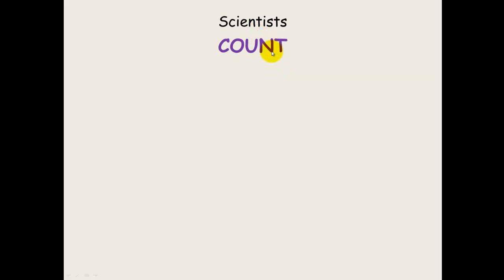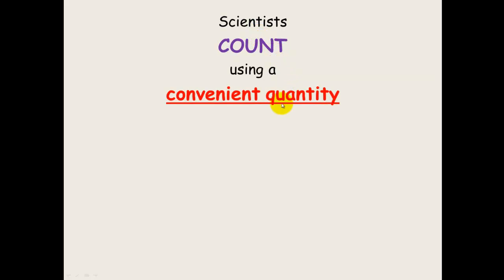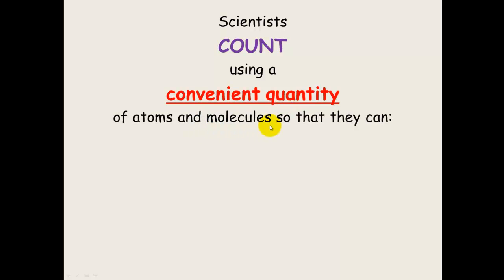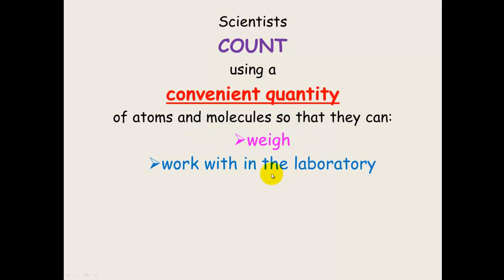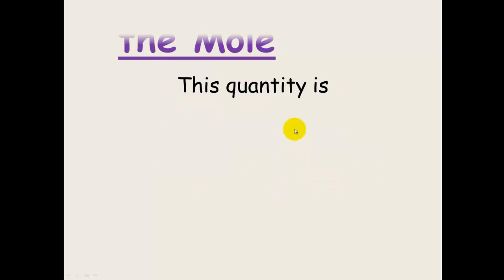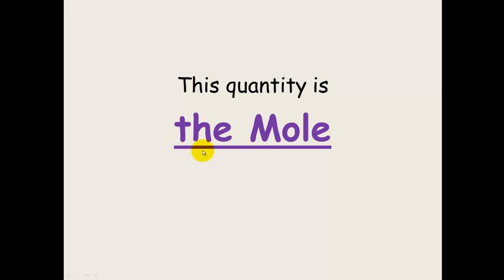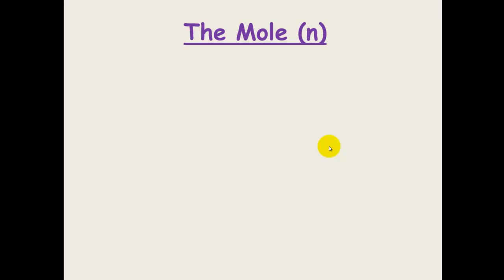Scientists count using a convenient quantity of atoms and molecules so that they can weigh substances, work in the laboratory, and use them in calculations. This counting using a convenient quantity is the mole — and all it is, is a counting quantity.